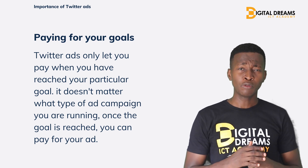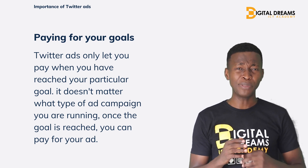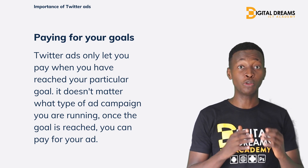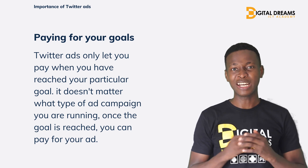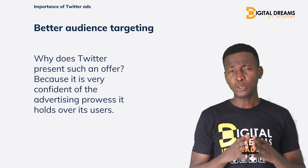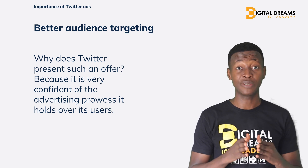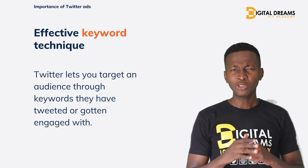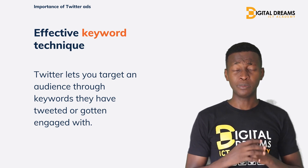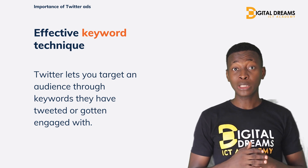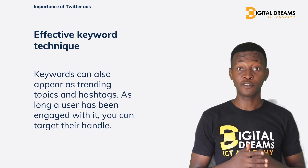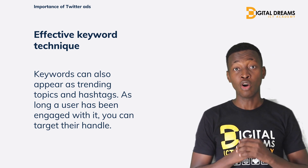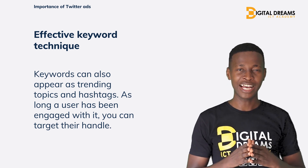Pay for your ads: Twitter ads only lets you pay when you've reached your particular goal. It doesn't matter what campaign you're running — once it has reached the goal you're aiming for, Twitter ads lets you pay for it. Twitter offers this feature because it is very confident in its ability to advertise your goods and services. Effective keyword techniques: Twitter lets you target your audience based on the keywords they have used, whether in tweets, trending topics, or other content they've engaged with. As long as the user has engaged with a particular keyword, you can find their handle.